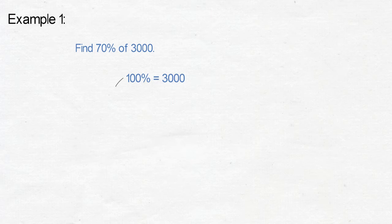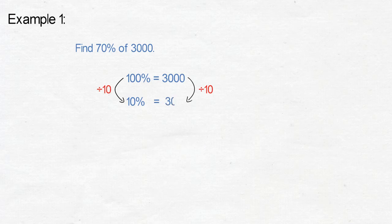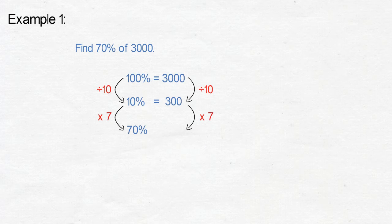Example one: find seventy percent of three thousand. One hundred percent equals three thousand. To work out ten percent, we divide three thousand by ten, which gives us three hundred. To find seventy percent, we multiply ten percent by seven: three hundred times seven equals two thousand one hundred. Seventy percent of three thousand is two thousand one hundred.